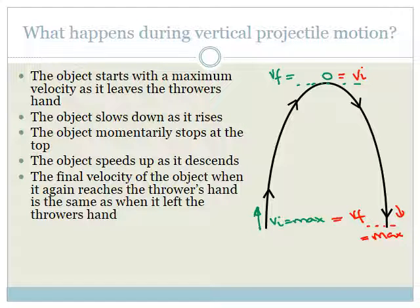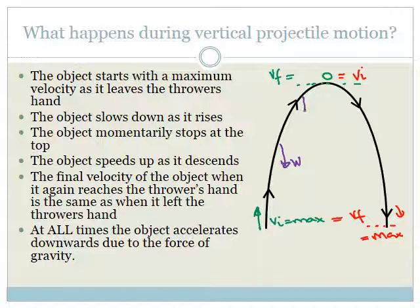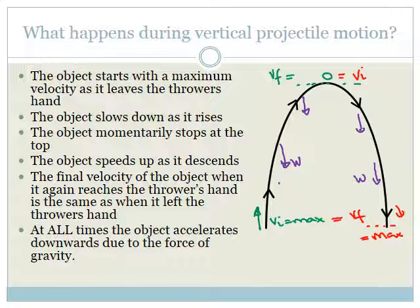The final downward velocity is going to be the same magnitude as the initial velocity. The reason for all these actions is that at all times, the only force acting on the object is the force of gravity — the weight — that is pulling it down. So the object is always accelerating downwards. On the way up, it's slowing down because of a net force downward. On the way down, it is speeding up because of that same force of gravity pulling it down.